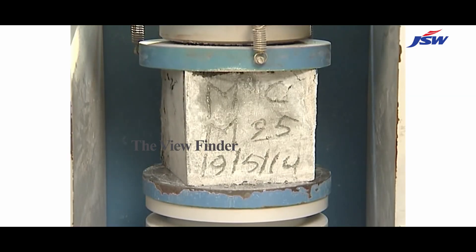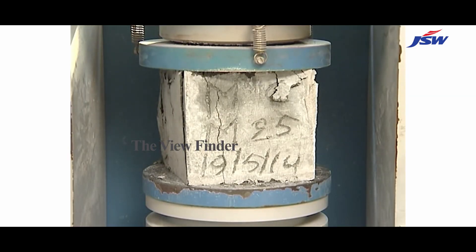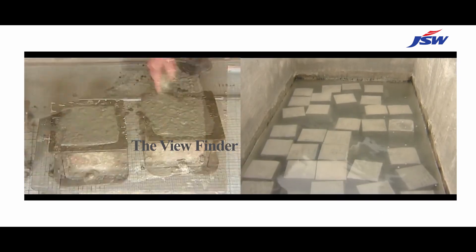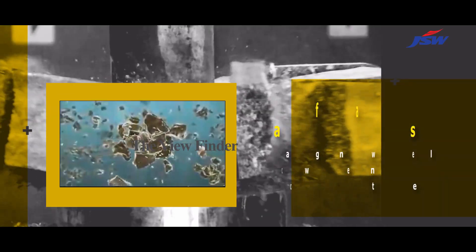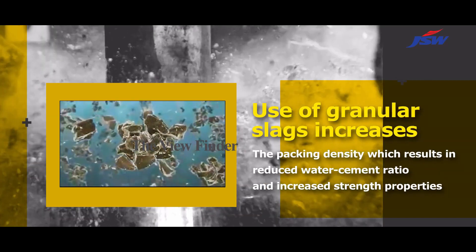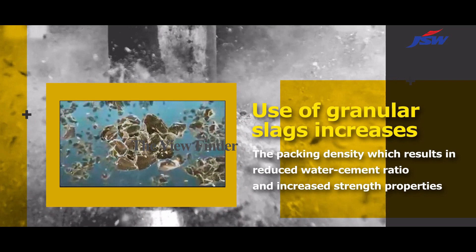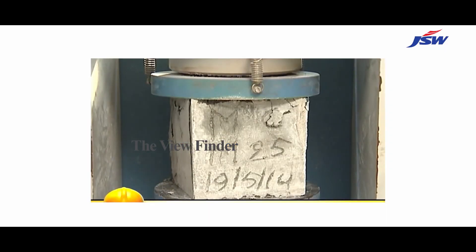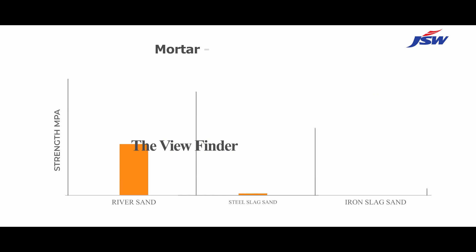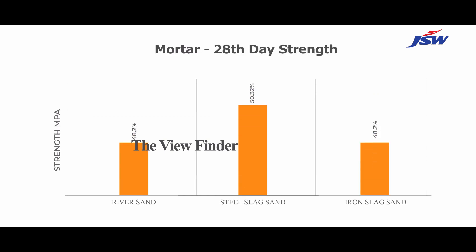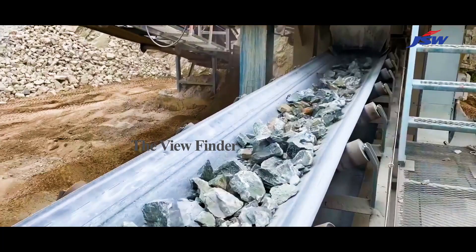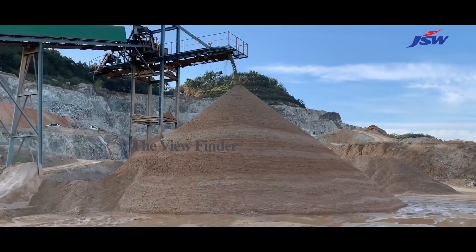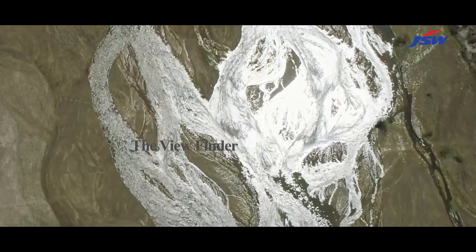Mortar and concrete cube tests conducted using the developed steel slag sand show improved strength when compared to river sand. It was found that the use of granular slags has increased the packing density, resulting in a reduced water-cement ratio and increased strength properties. The rough spherical particles of granular slag also improve the bond and adhesion strength.